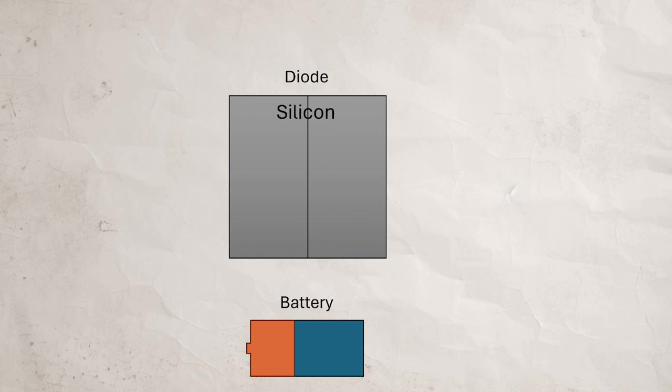If you take silicon and you dope or add just a little boron or phosphorus, you add free electrons or free holes where electrons could go. Both of those things make it a little more conductive, but the magic happens when you put those doped materials next to one another.